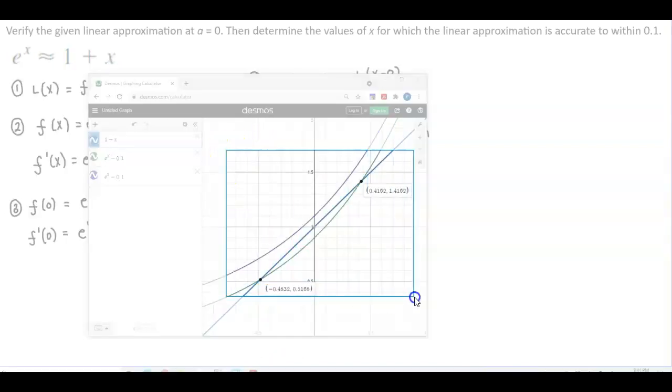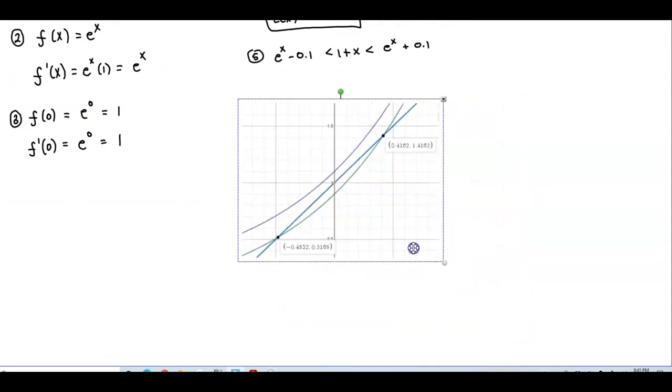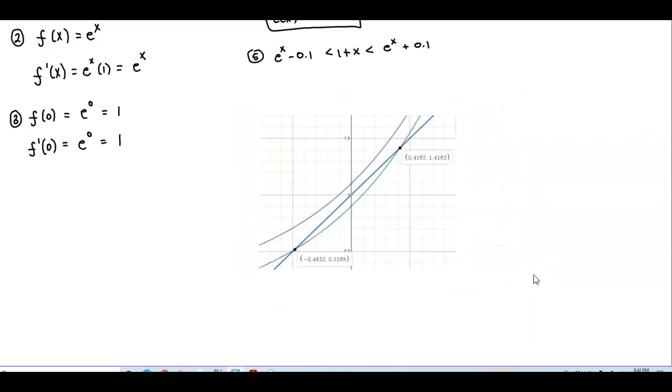So let's go ahead and copy that. Okay, so again, let's identify. So we know the linearization, or L of x, is the one in blue, which is equal to 1 plus x. We know that the green is e to the x minus 0.1, and the one in purple is e to the x plus 0.1. So we can determine that the values of x of this interval are in between negative 0.483 and 0.416.